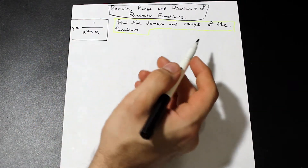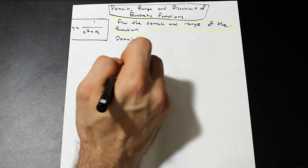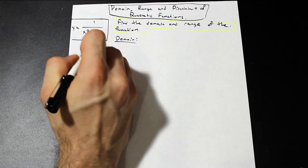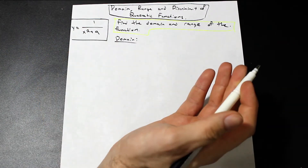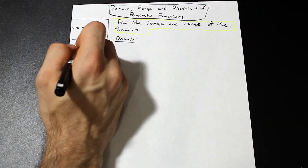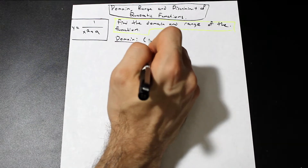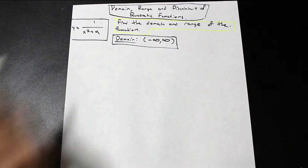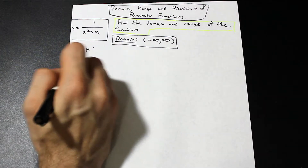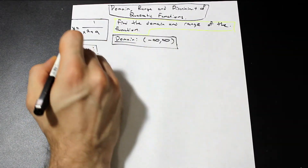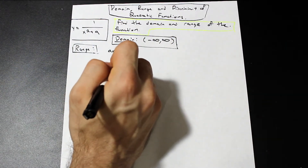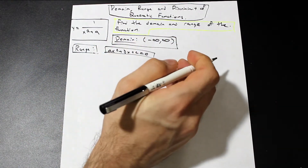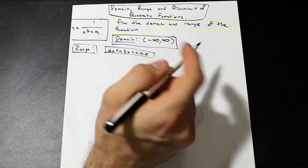We're going to show you now this really cool trick: how you can evaluate these quadratic functions using the discriminant. So let's take a look at this question — we're asked to find the domain and range. The domain is actually really easy; you should know by now that you can't divide by zero. Since this is x squared plus nine and x squared can never be negative, we know immediately just by inspection that the domain is all real numbers. The range is actually why we're doing this question.